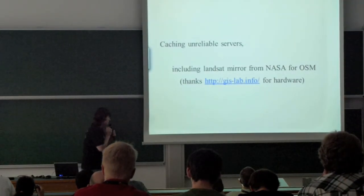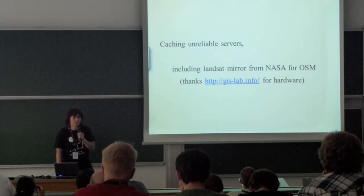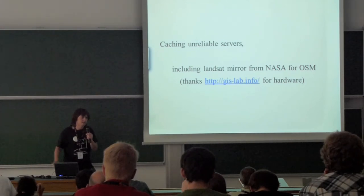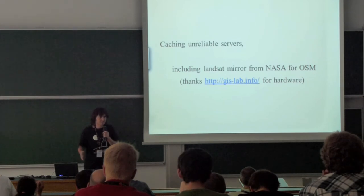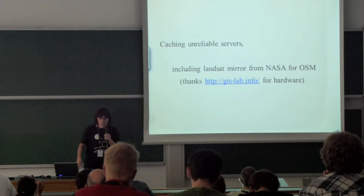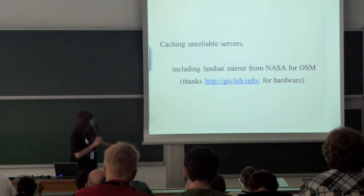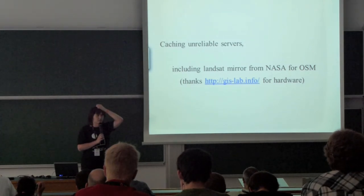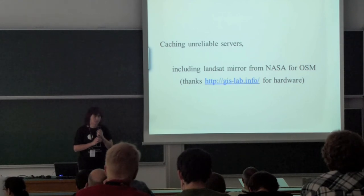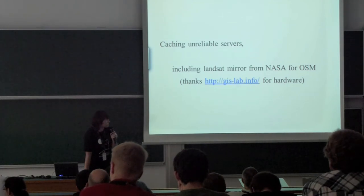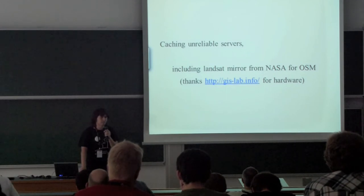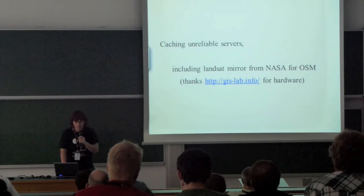TWMS also allows you to cache unreliable servers. When it can't find a tile on the server — because the server isn't available — it takes another tile covering the same area, zooms and crops it to give you at least something. The Landsat mirror from NASA that closed its WMS service now has a second Landsat menu item in JOSM with a cache that goes via TWMS, thanks to eSLAB info.